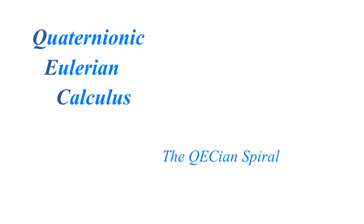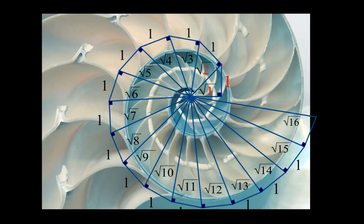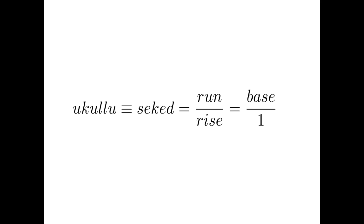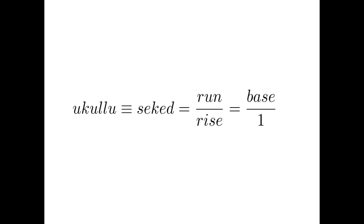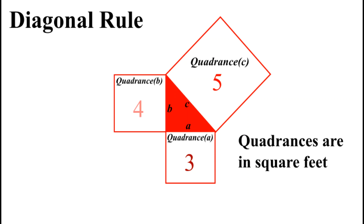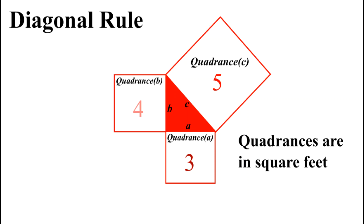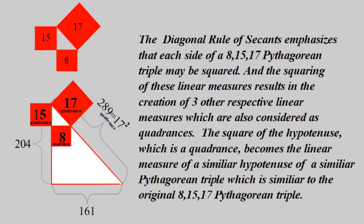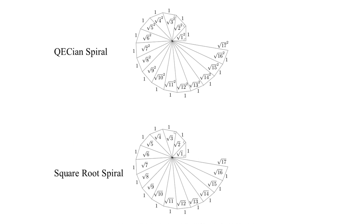However, it fortunately returns us back to Quik. Back in video 6 we introduced the spiraling right triangles, also known as the square root spiral and the Pythagorean spiral. These spiraling right triangles were based upon the Babylonian and Egyptian concepts of the Ukulu and the Seket, respectively. But we found in these spiraling right triangles that the Ukulu and the Seket were also equivalent to trigonometric identities. We also introduced the concept of quadrants in video number 3. A quadrants is the squared side of a right triangle that may be expressed as either a square measure or a linear measure.